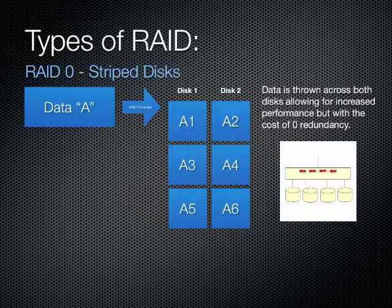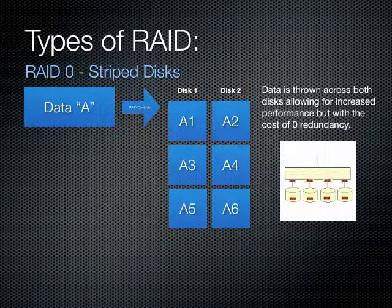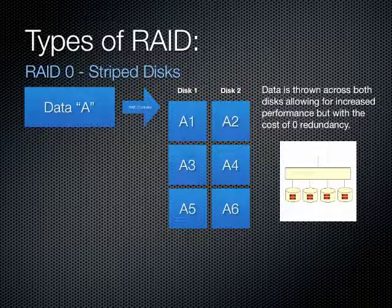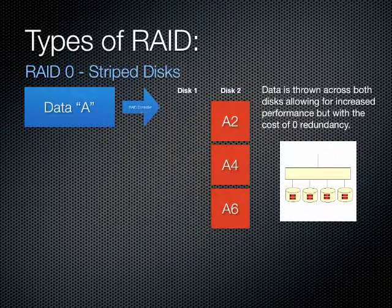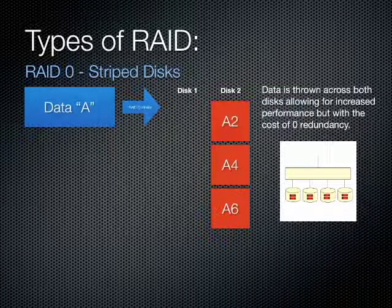There are many types of RAID, the first of which we'll talk about is RAID 0, or Striping. Data is thrown across multiple disks, allowing for increased performance and storage. The drawback here is there are no redundancies in place, and if one disk fails, the data in the entire array fails with it.